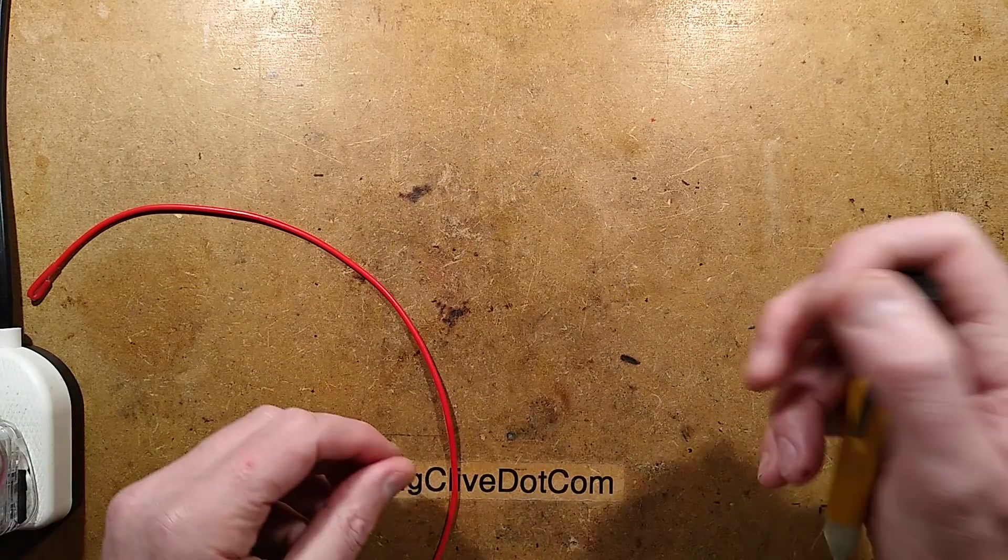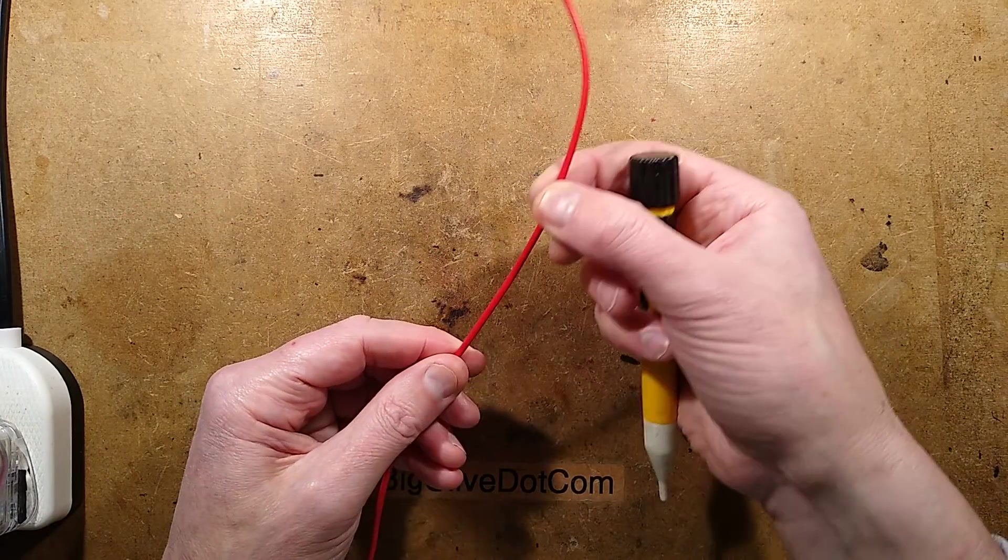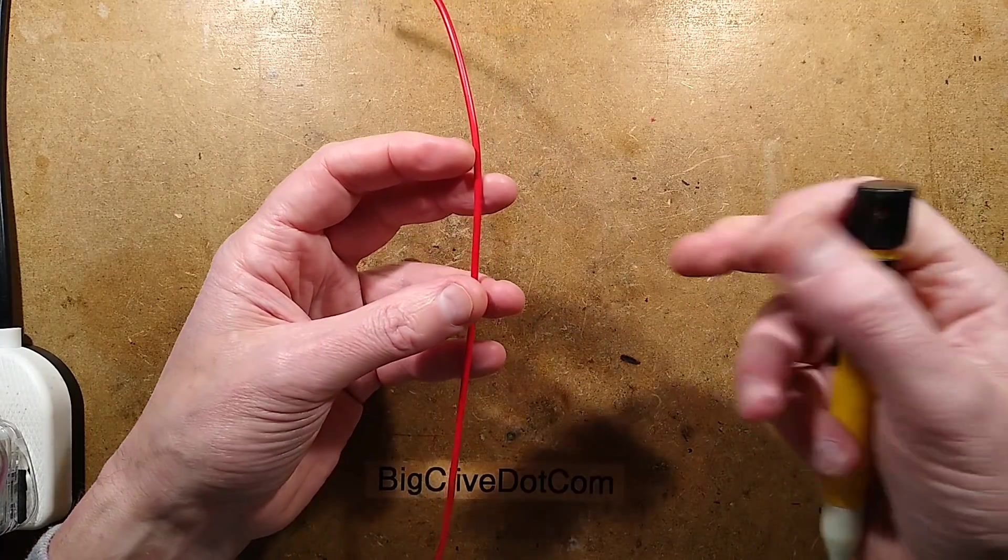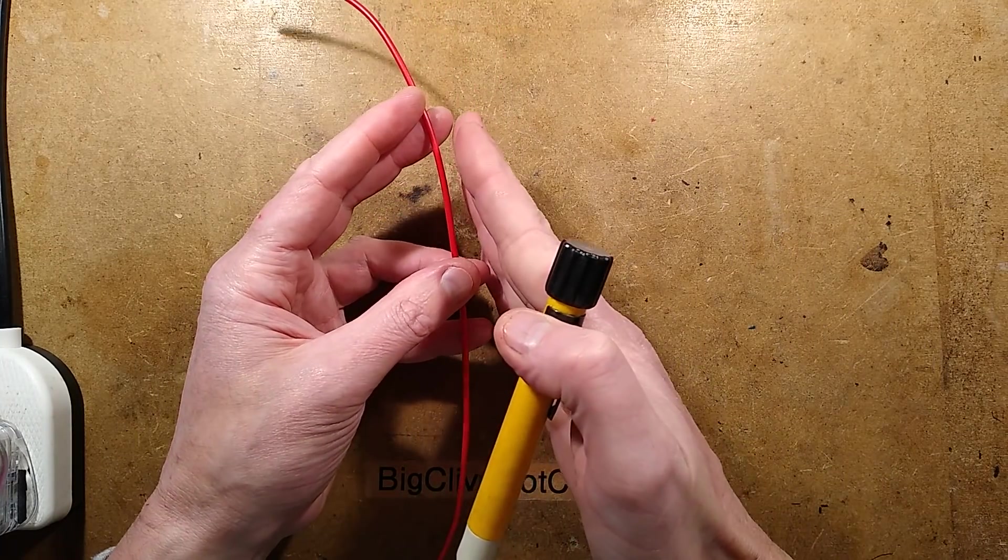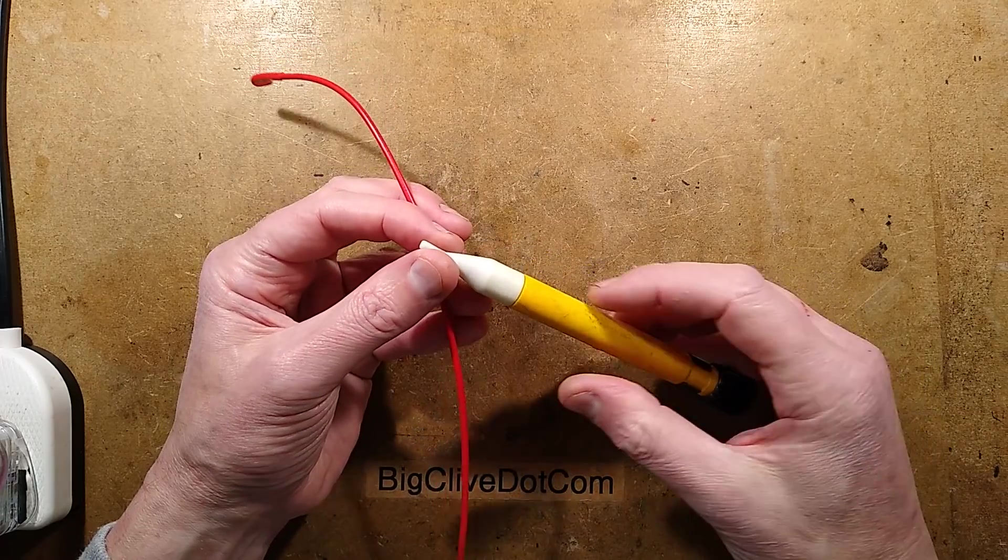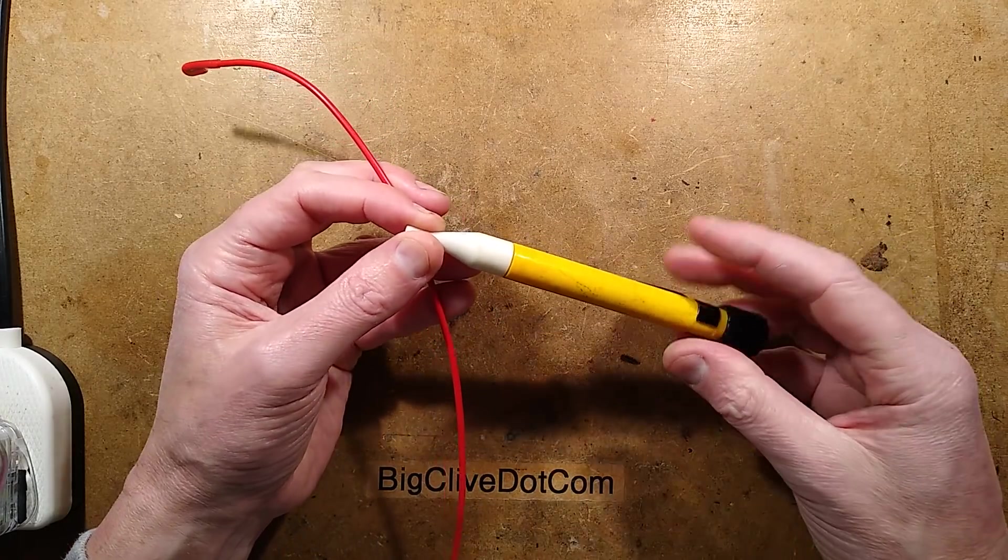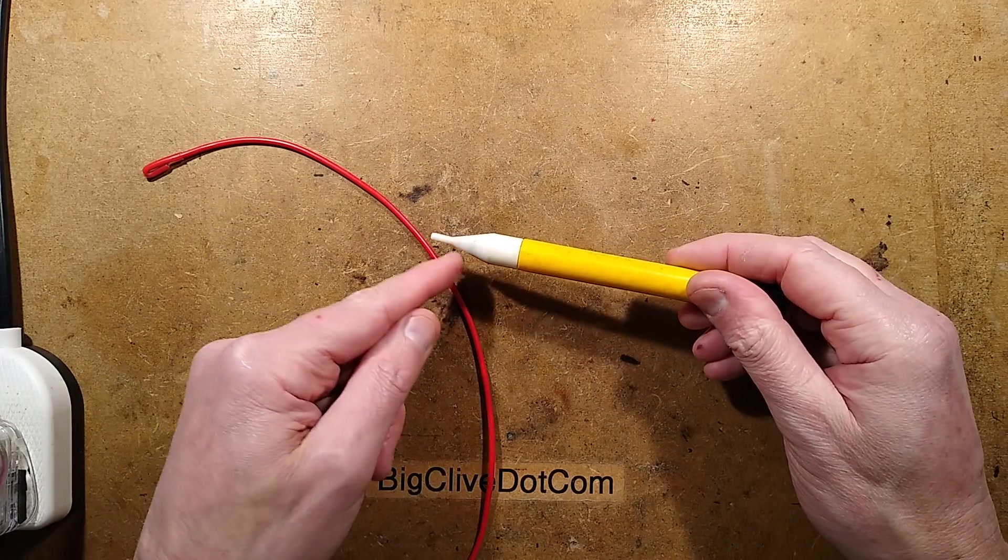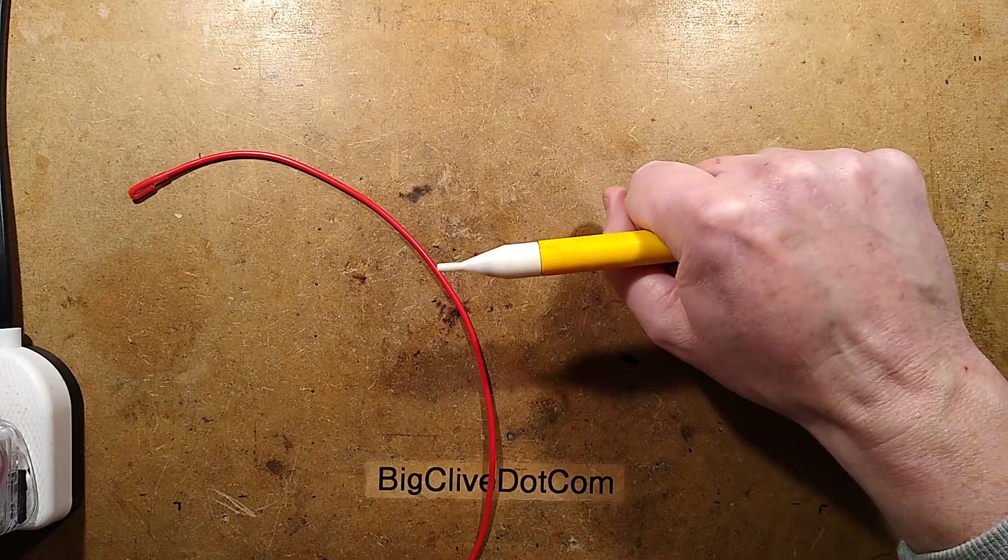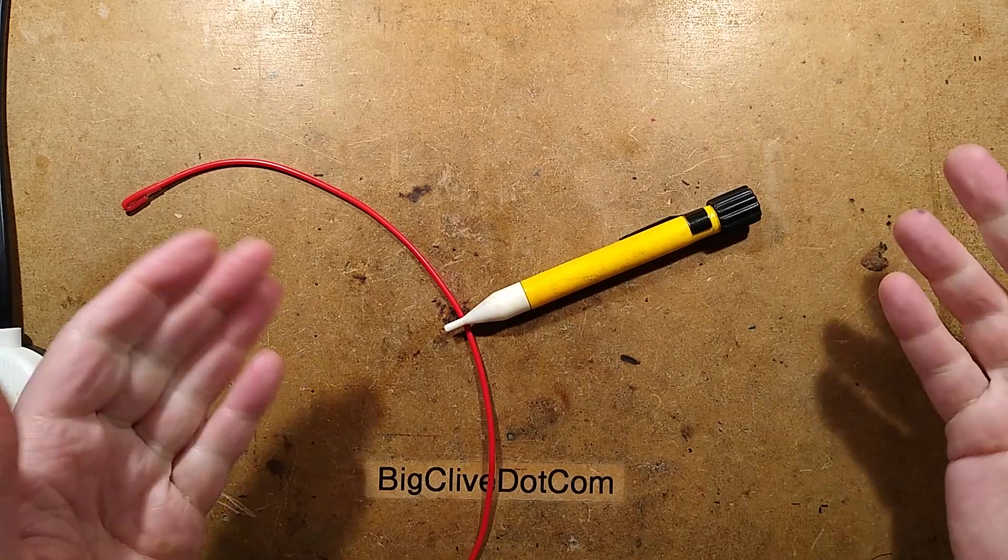The way this device works is it detects the capacitive coupling of current from a live cable. All cables have that slight capacitive coupling, it's very low, but it's enough to be picked up by a very high level amplifier in here. The tip couples on capacitively and then there's another capacitive connection through your body to ground.